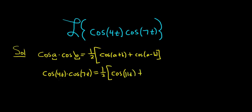Plus, and then here we subtract. 4t minus 7t, so 4 minus 7 is negative 3t.